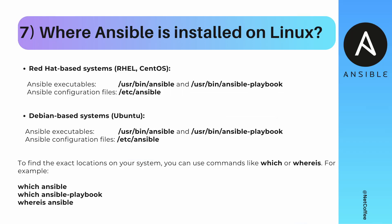Preparing for an Ansible interview requires familiarity with the location of Ansible executables and configuration files on different Linux distributions. For Red Hat systems like CentOS, executables are in `/usr/bin/ansible` or `/usr/bin/ansible-playbook`, and configuration files are in `/etc/ansible`. For Debian-based systems like Ubuntu, executables are also in `/usr/bin/ansible` and `/usr/bin/ansible-playbook`, while configuration files are also in `/etc/ansible`. To find the exact location on your system, you can always use commands like `which` or `whereis`.